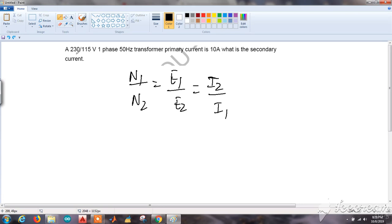In our question, 230 by 115, that is E1 by E2, is 230 by 115 which will be 2. So the turns ratio is 2.